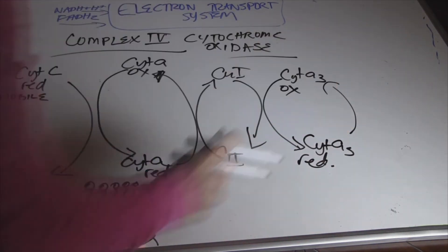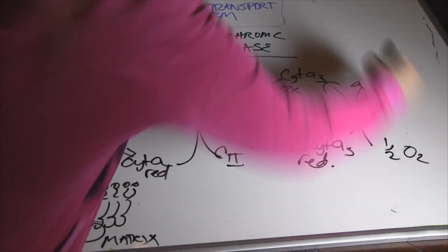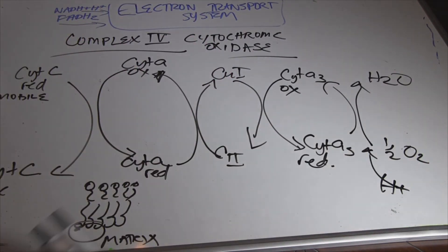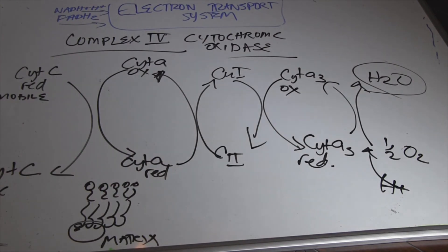Here we have cytochrome A3 is going to be the next electron carrier, the next redox reaction. And from here, we're going to get some hydrogens from the matrix, specifically 2, and we're going to be forming water. So here, oxygen is our final electron acceptor.